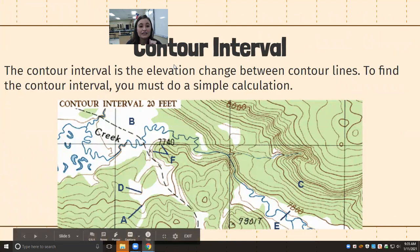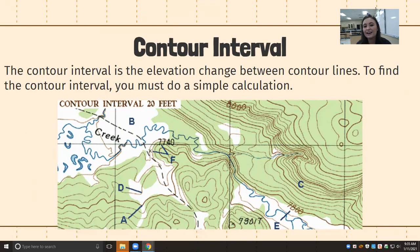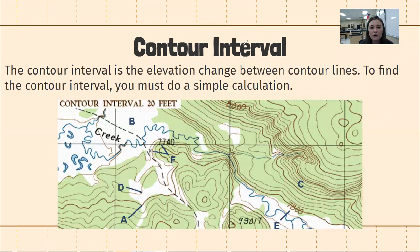Now let's move on to contour intervals. A contour interval is the distance — meaning the elevation change — between two contour lines, and it will be the same for the entire map. So every single gap between each one of these contour lines, no matter how close together they are, has that same elevation change.